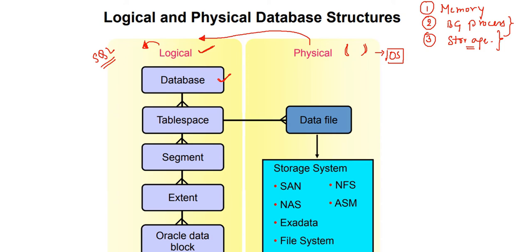The database itself is a logical entity — there is no physical existence of a database, but data is stored somewhere in physical format, and that physical storage is the data file. We have already discussed Oracle data blocks, which are the smallest entity where data resides. The hierarchy is: database → tablespace → segments → extents → Oracle data blocks. The only physical things are data files and the storage system.